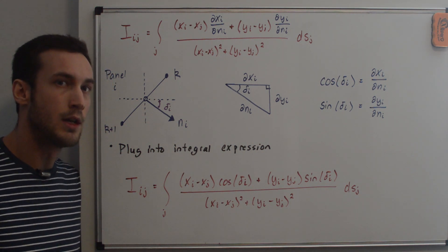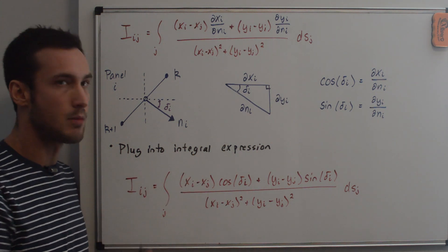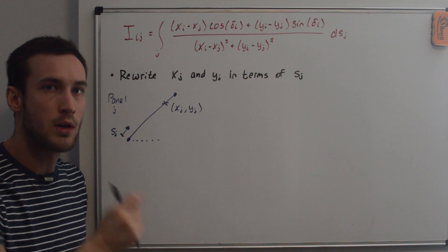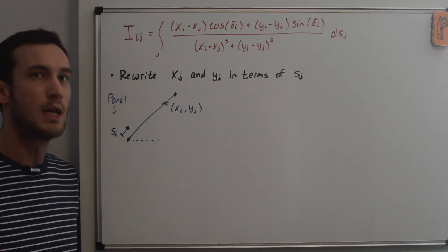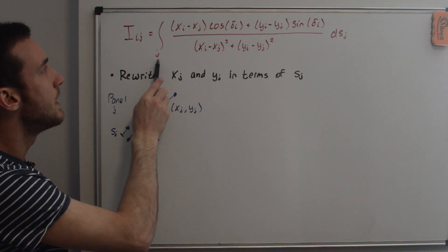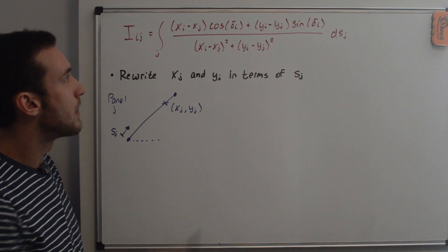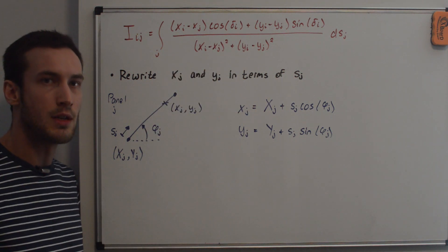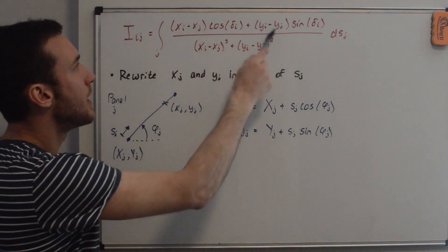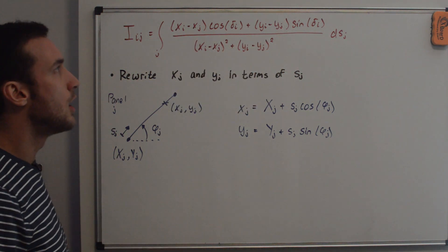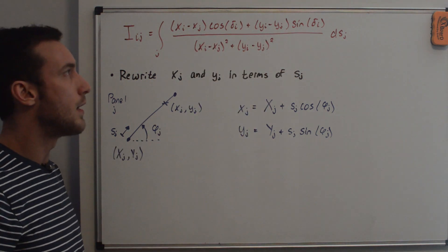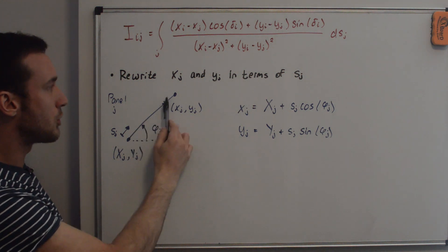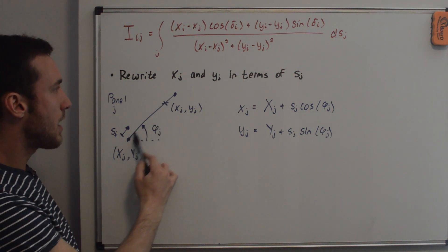Make sure your i and j indices are visible and clearly written, because if you mix them up you'll get completely wrong expressions and your panel code won't work. I_ij is one of the terms in the normal velocity equation for the i-th panel, evaluated at the i-th control point, but this integral is evaluated over the j-th panel. When integrating, x_i and y_i stay constant (the i-th control point coordinates), while x_j and y_j change as we integrate from the start to the end of panel j.